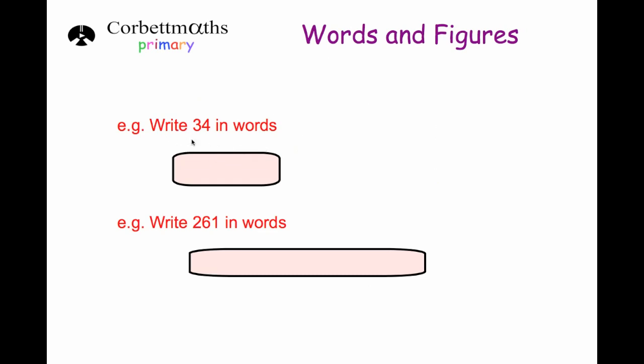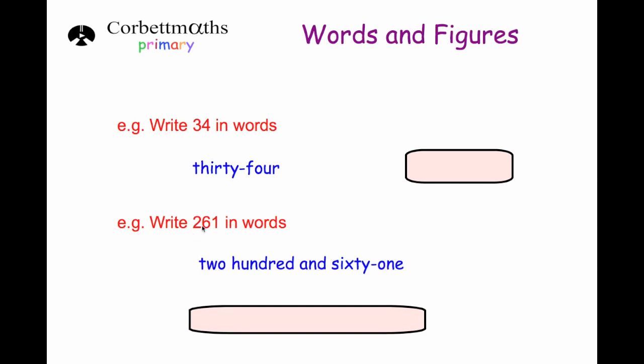To begin with, our first question says write this number in words. Now I firmly believe a student should know the numbers from one to one hundred just instantly by looking at them. So this one, three four, well that's going to be thirty-four. Again it should have the hyphen in. Sometimes you might see it without the hyphen but it should have it there. The next question: we've been asked to write this number in words. Now it's got a two in the hundreds column, so it's going to be two hundred. And then we've got the sixty-one. So it's going to be two hundred and sixty-one.